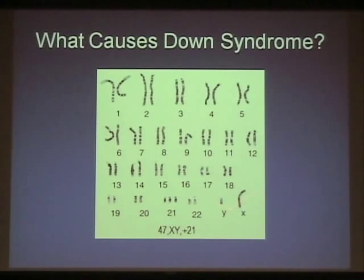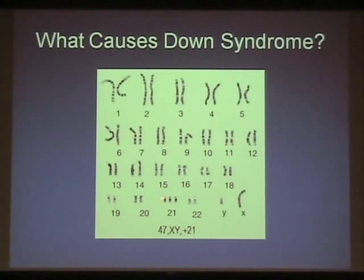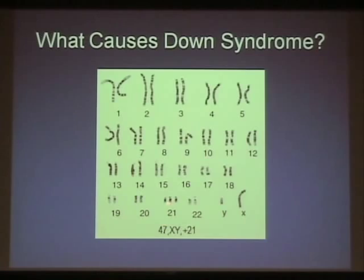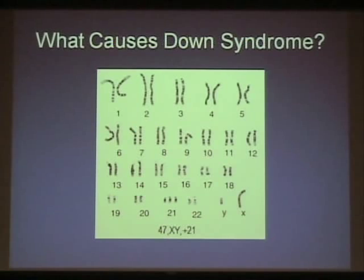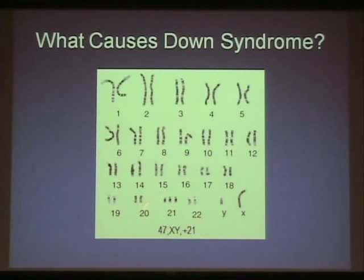This would be male because there's one X chromosome and one Y chromosome. Here's the difference: there are three 21st chromosomes rather than two, making for a total of 47 chromosomes rather than 46. Technically, the 21st chromosome is actually smaller than the 22nd, but when they were first numbered the microscopes weren't good enough to see clearly, and they were never reordered. This one extra chromosome is the entire cause of Down syndrome.